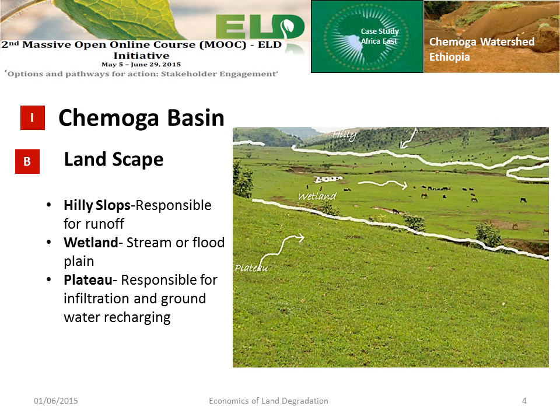When we look at the composition of landscapes in the basin, the predominantly common landscapes are hilly slopes, wetland, and plateau areas. The hilly slopes, once covered by forest, are now exposed to the direct impact of rain, and coupled with their slope, they are becoming a major source of runoff. The wetland is mainly the plain area through which streams flow. We also find plateau areas with moderate slope, which are responsible for water infiltration and groundwater recharging.